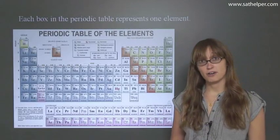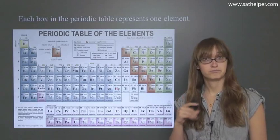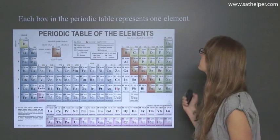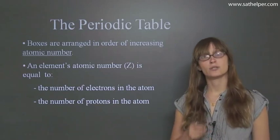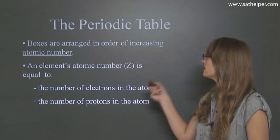So each box in the periodic table represents one element. Seems simple enough. And boxes in the periodic table are arranged in order of increasing atomic number.